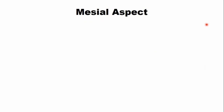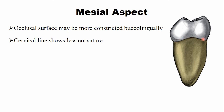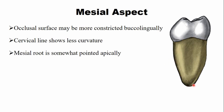From the mesial aspect, the occlusal surface is constricted buccolingually — more so than the first molar. The cervical line shows a short curvature toward the crown surface, but compared to the first molar or premolars, this curvature is less pronounced. Only one root is visible from the mesial aspect, and it is somewhat pointed toward the apex.